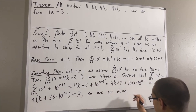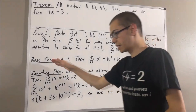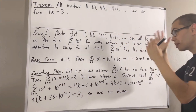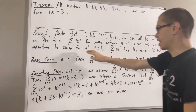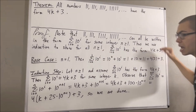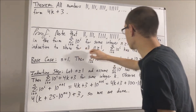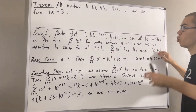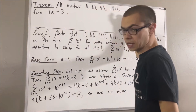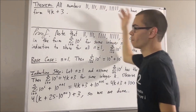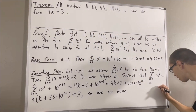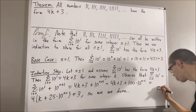Because we've completed both the base case and the induction step, we've shown by mathematical induction that this statement is true. And because we've proven this statement, this means we've shown that all of these integers have the form 4k plus 3. So this completes the proof.